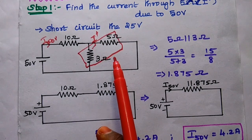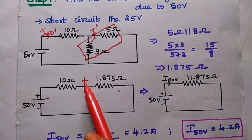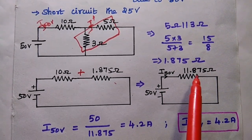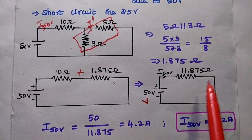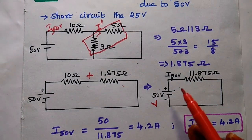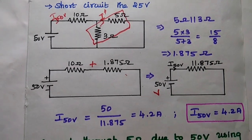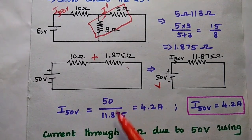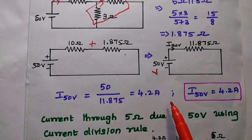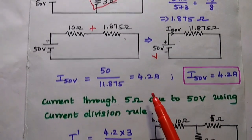Here we can get 10 ohm in series with this 1.875 ohm. Since these two resistors are in series, we can simply add to get 11.875 ohm as the equivalent resistance. From this we can find out the current due to this 50 volt. According to Ohm's law, I is equal to V by R, so 50 divided by 11.875 equals 4.2 ampere — that is the total current flowing through this circuit.